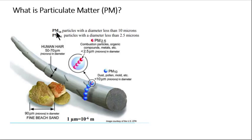Likewise, we call the mass concentration of PM pollution for particles up to and smaller than 2.5 micrometers, PM2.5. Both PM10 and PM2.5 are among the criteria air pollutants, where ambient air concentration standards exist.